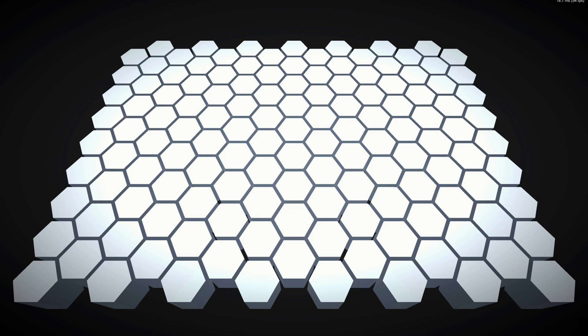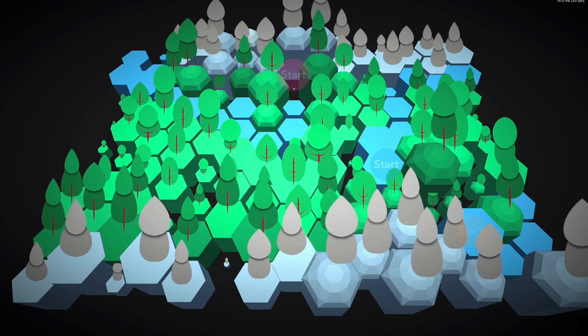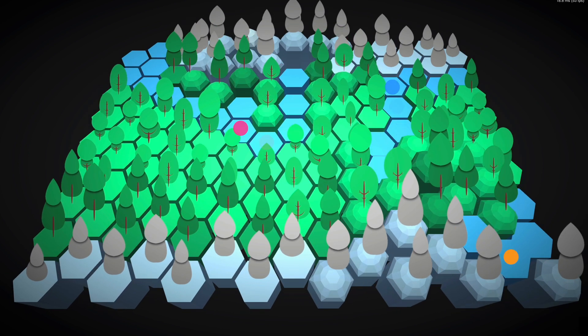Also, at the moment our simulation can only calculate rivers. This essentially works by picking a tile which is above sea level, picking a random edge tile, and then attempting to connect the dots. So anyway, I'll need to add some logic for lakes, oceans, swamps, and so on.